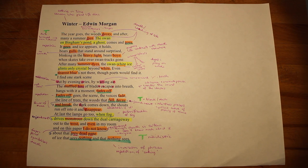In his poem Winter, Edwin Morgan explores the themes of death and deterioration, the relentless passing of time and nature.